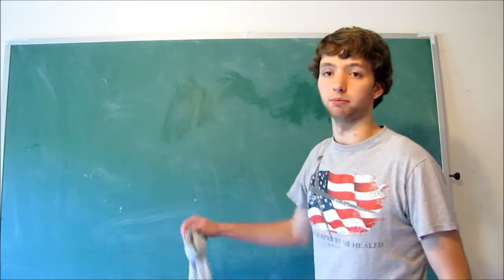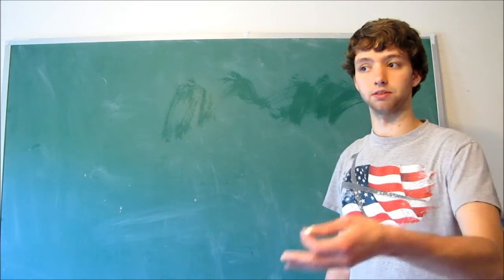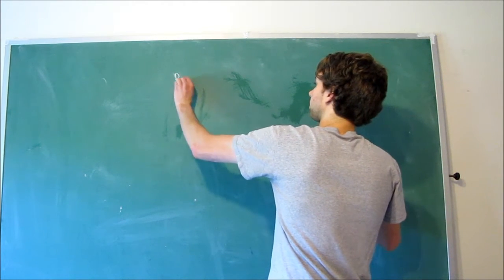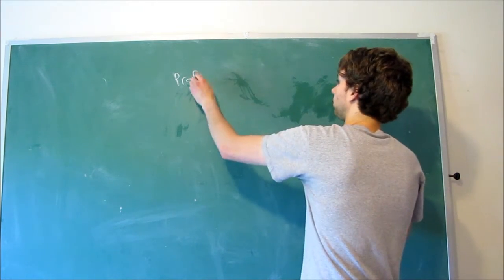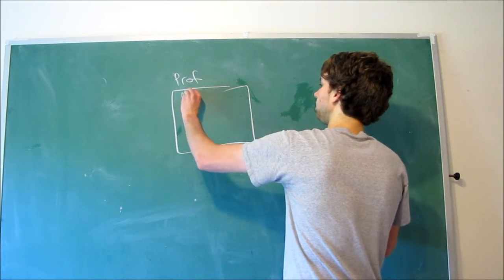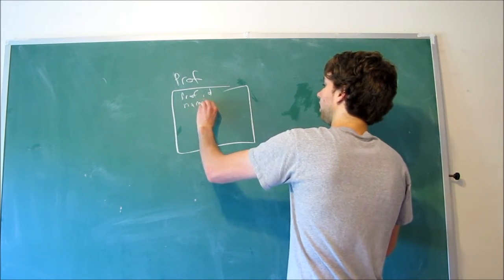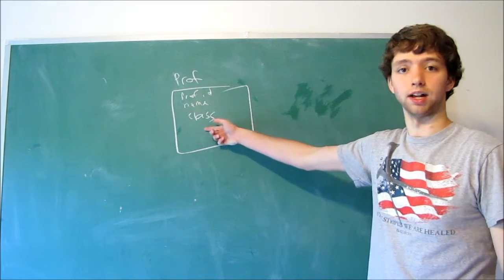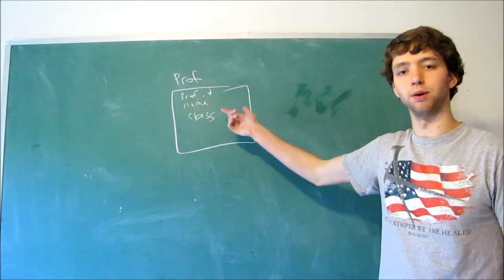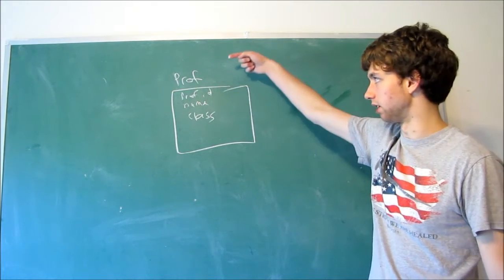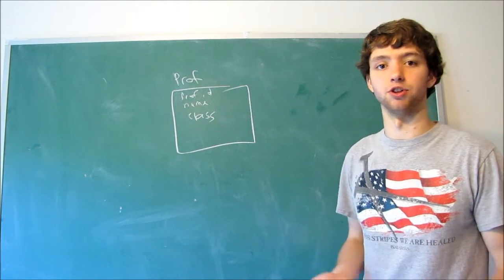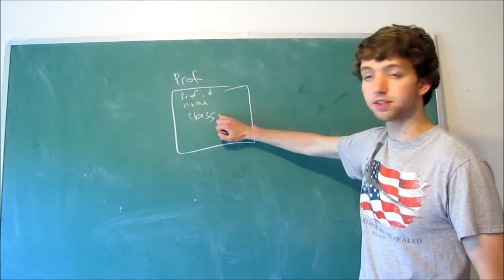Let me show you how to design all three for class-to-professor. For a one-to-one relationship, we'd have a professor table with a professor ID, the name of the professor, and then a class column — that's the one class they teach, and it's the only class taught by that professor. That's how you store a one-to-one relationship, and typically you wouldn't split that off into another table.